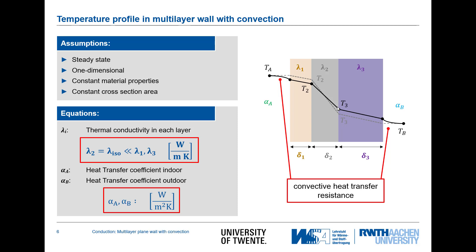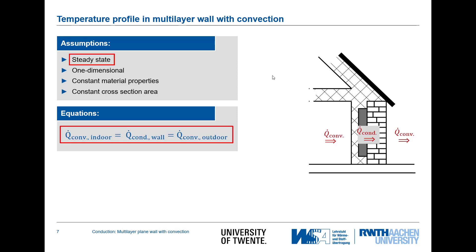These two additional resistances lead to two additional temperature drops between TA and TB before entering the solid wall. The reduced temperature gradient directly translates to reduced heat transfer through the wall. We can apply the same assumption as for the multi-layer wall: the heat flux is constant throughout the problem — convective transport indoors equals conductive transport through the wall equals convective transport outdoors.